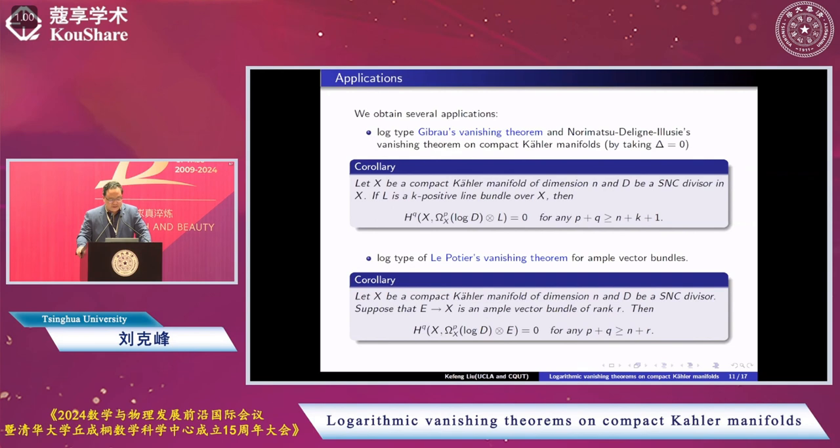Also the log type for Poincaré's vanishing theorem for ample vector bundles. On my slide we stated for line bundles, but for vector bundles, for ample bundles, it still works. We consider compact Kähler manifold dimension n and simple normal crossing divisor D. Suppose E over X is an ample vector bundle of rank R, then H^q(omega^p(log D) tensor E) equals 0 for any p plus q greater or equal to n plus R.